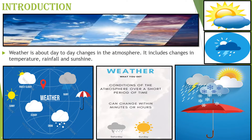Dear students, when you read the newspaper daily and watch TV or hear others talking about weather, you must have noticed that weather is about day-to-day changes in the atmosphere. It includes changes in temperature, rainfall, and sunshine. For example, it may be hot or cold, sunny or cloudy, windy or calm.